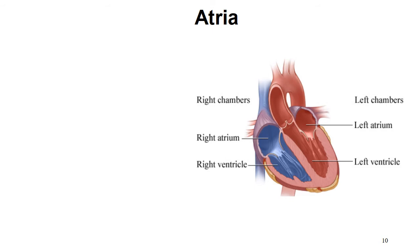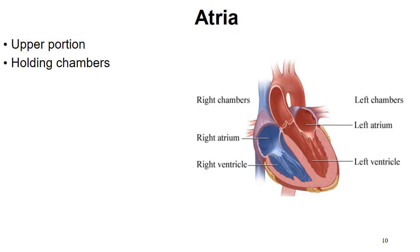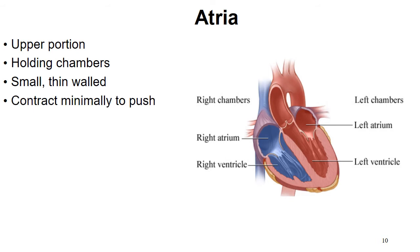Blood flows from top to bottom — atria to ventricles — and from right to left. The atria are the upper portion of the heart; they are the holding chambers. Blood pools into the right atrium and is held until a valve opens, then blood flows from top to bottom. These are small, thin-walled chambers because they don't need to do very much pumping. They contract minimally to push blood into the ventricles, and gravity assists blood moving from top to bottom.